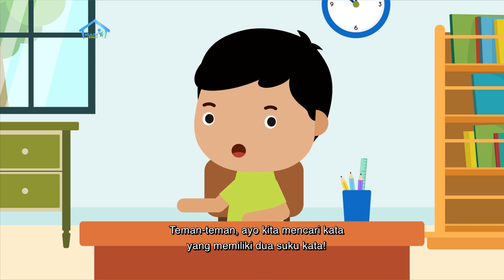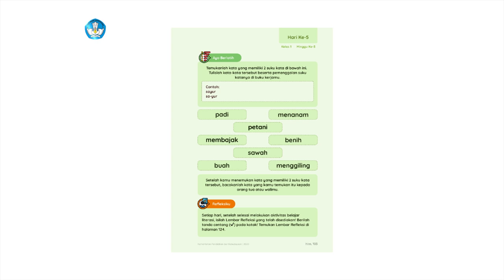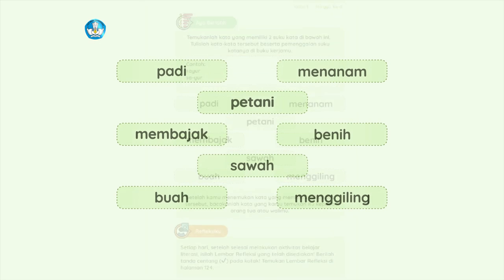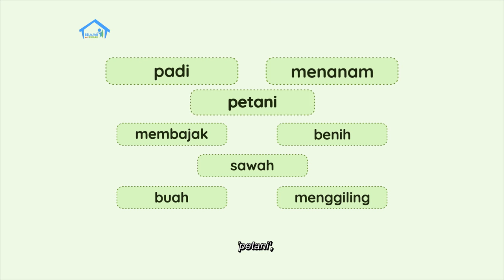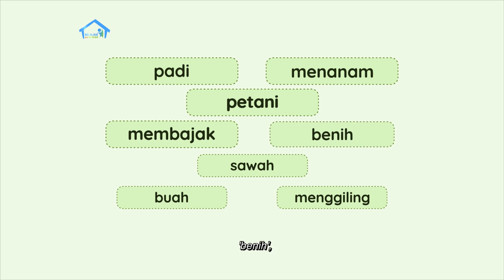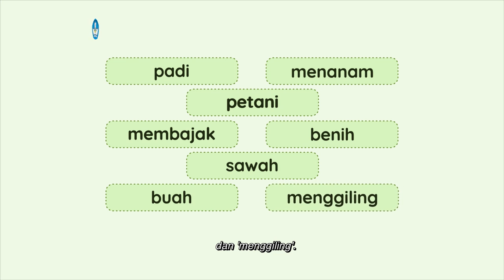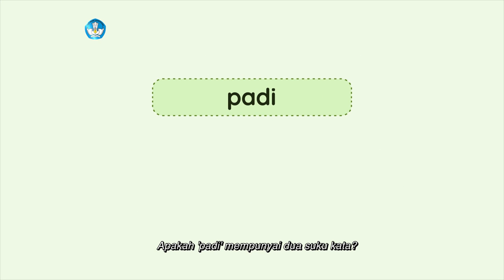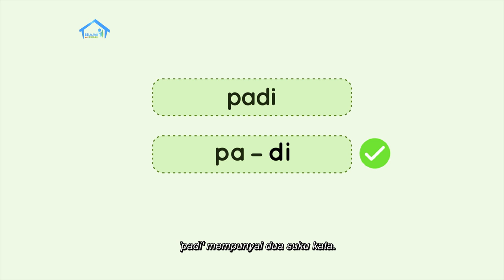Teman-teman, ayo kita mencari kata yang memiliki dua suku kata. Kita punya kata padi, menanam, petani, membajak, benih, sawah, buah, dan menggiling. Apakah padi mempunyai dua suku kata? Kita baca bersama ya. Pa-di. Ada dua suku kata. Berarti benar, padi mempunyai dua suku kata.